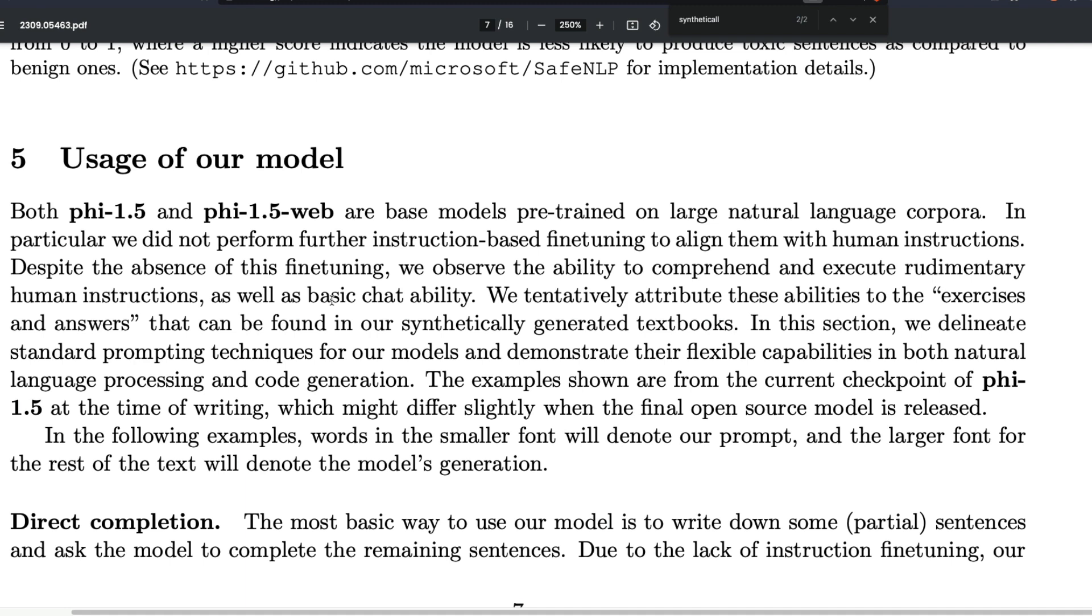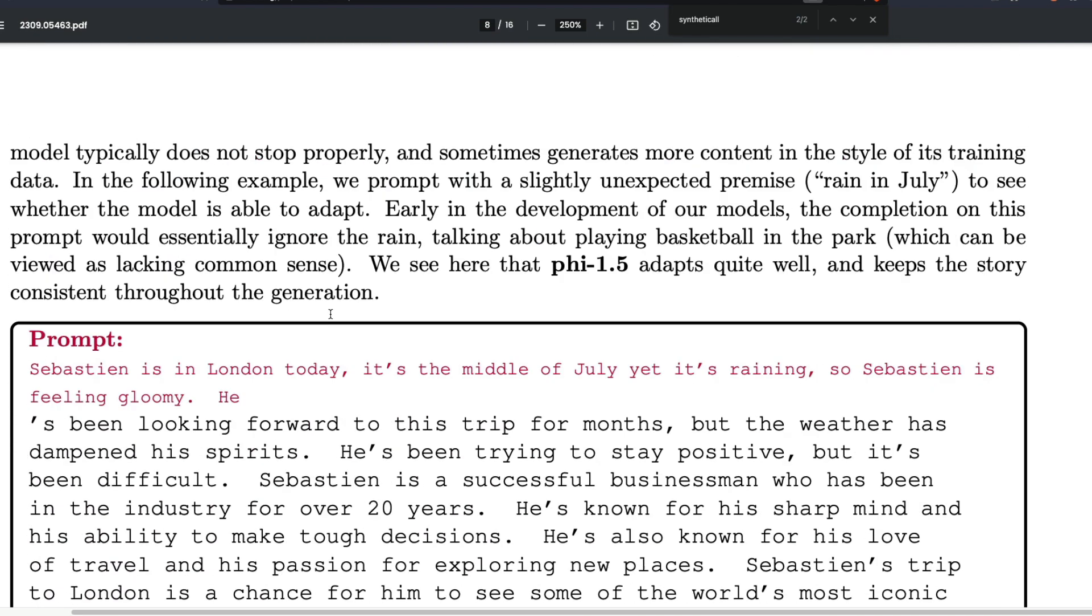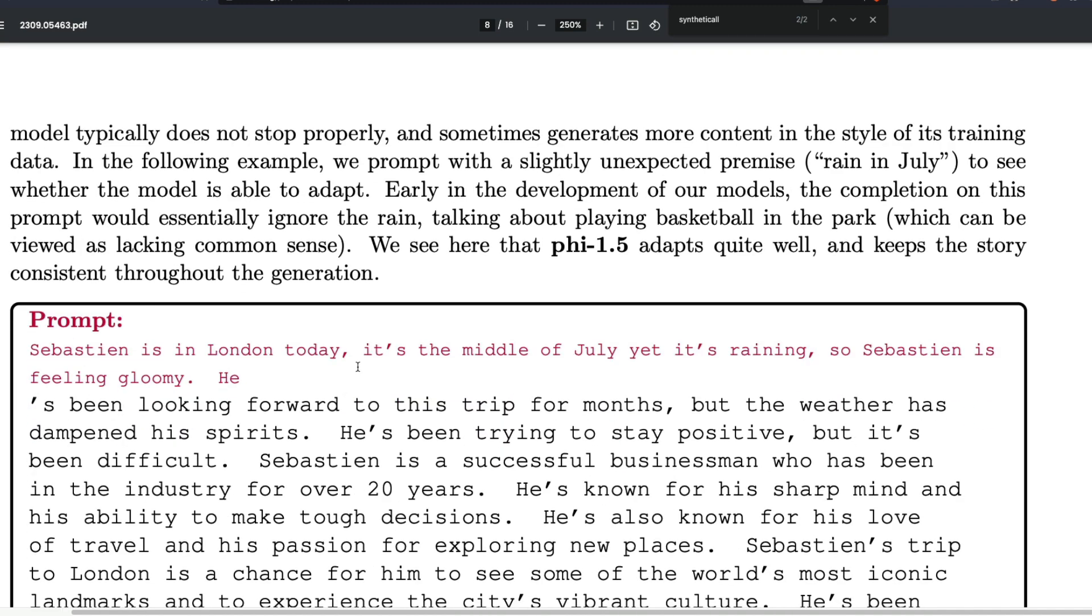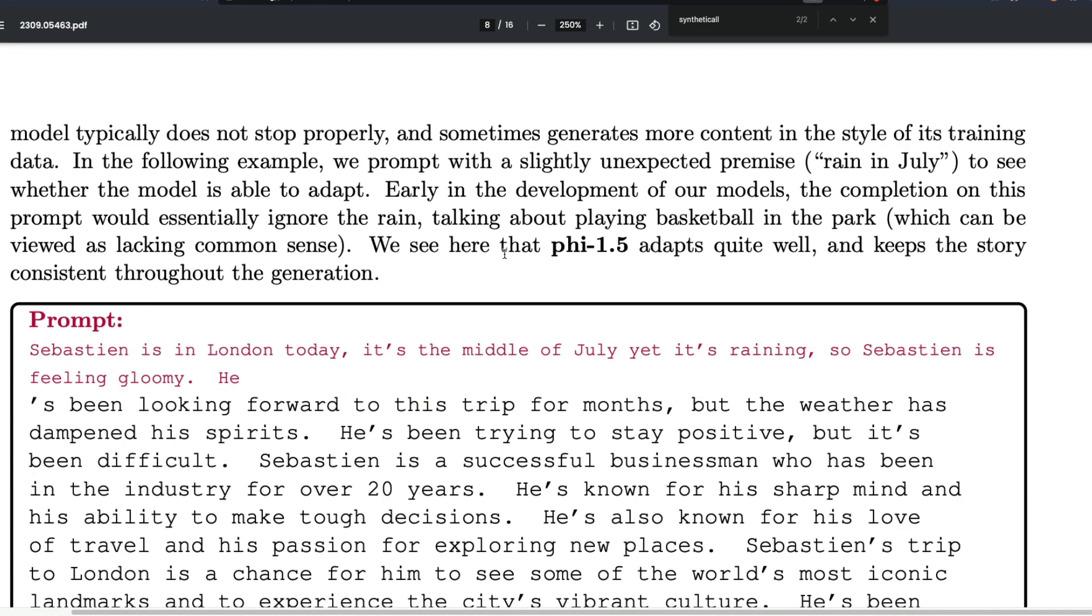This, in fact, tells us two things. One, the input data set is very, very important. I can understand. But the fact that, you know, the gap between 1.3 billion parameters, 7 billion parameter is huge. That is a great thing to learn. Okay, benchmarks is one thing.